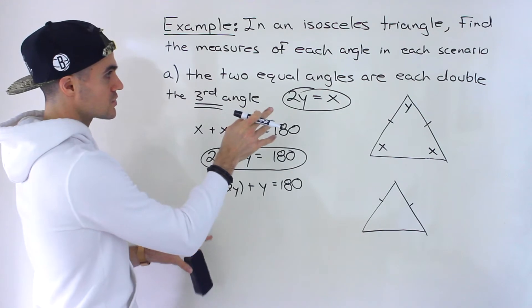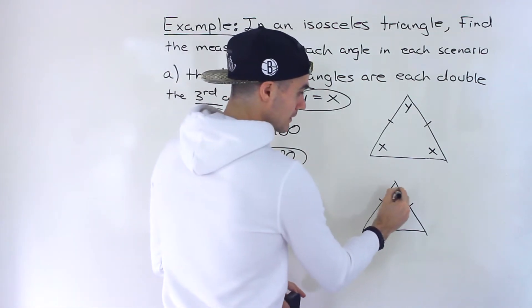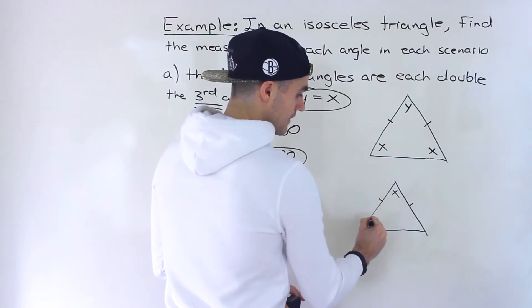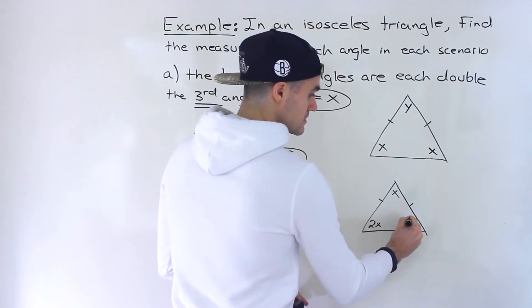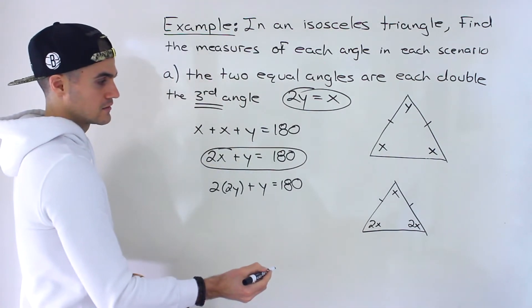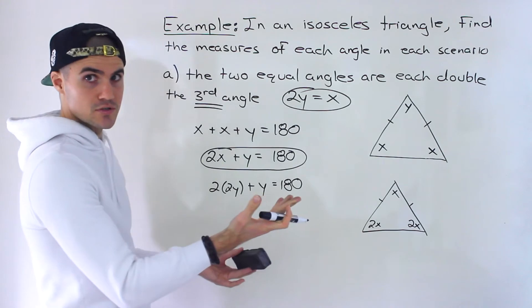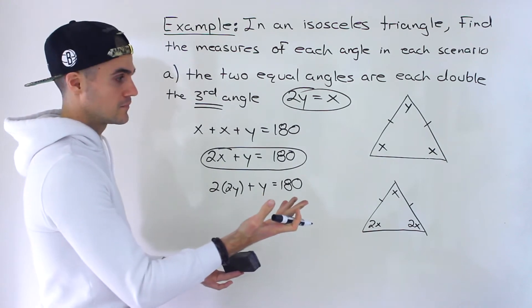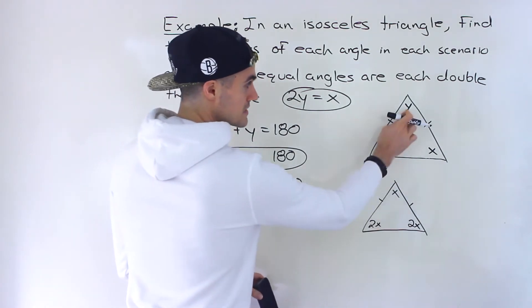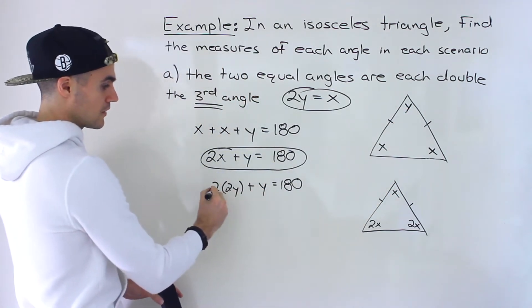You could label the third angle as x and label both equal angles as 2x. Then you'd have x plus 2x plus 2x equals 180. The x value you solve for would be the third angle — in our two-variable setup, that's y. Both approaches give the same result.